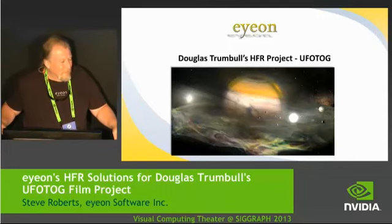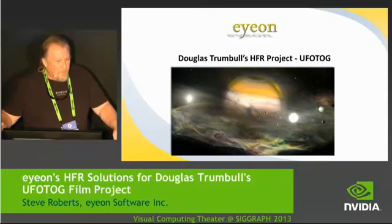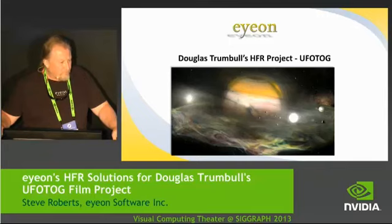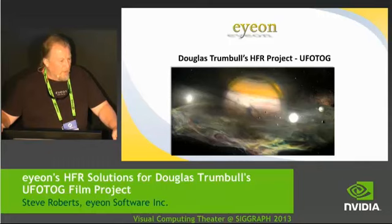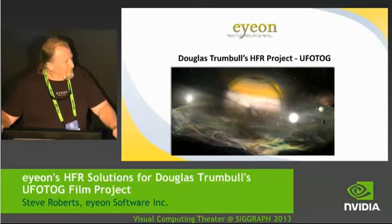We were using Canon C500s for this, with Codex recorders — so it's all done in Canon RAW. They output about 14 stops of dynamic range and come out as a 10-bit RAW file. We also have a question from the virtual theater: do you think we're at or near a tipping point where our expectations about traditional production techniques are going to go through a radical shift?